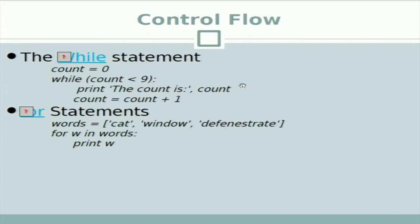Control flow includes while statements and if statements. Here is an example of a while statement: it starts with a count, then 'while count < 9' it will print the count and increment the count up to 9, printing the count in each loop.